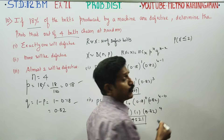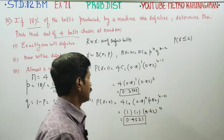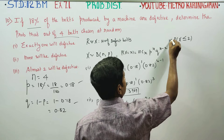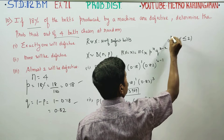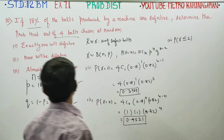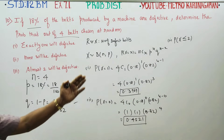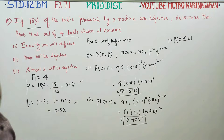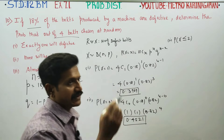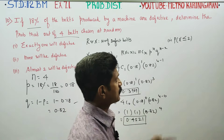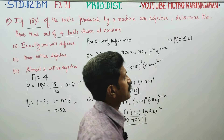The third subdivision is called 'at most'. At most 2 defective means P(X ≤ 2). Note: 'at least' means greater than or equal to, while 'at most' means less than or equal to. So we need P(X ≤ 2) = P(X = 0) + P(X = 1) + P(X = 2).